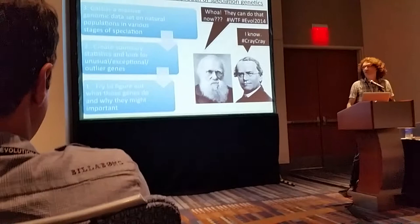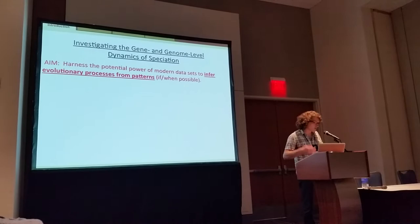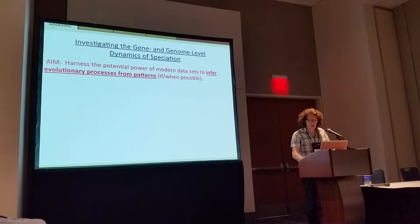Speciation. We create summary statistics and look for loci with exceptional statistical characteristics, then try to figure out what those genes might be doing. If our aim is to get the most out of these massive modern data sets and to have the greatest confidence in the inferences we're making about things like outliers, then we need to answer several questions.